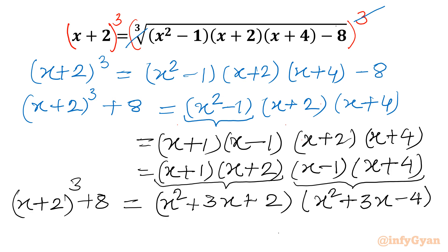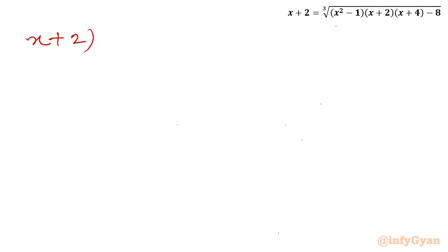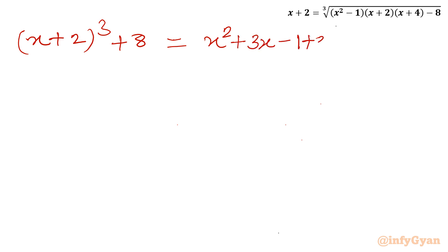I will rewrite the constants: 2 becomes (minus 1 plus 3) and minus 4 becomes (minus 1 minus 3). So the equation becomes: (x plus 2)³ plus 8 equal to (x² plus 3x minus 1 plus 3)(x² plus 3x minus 1 minus 3).